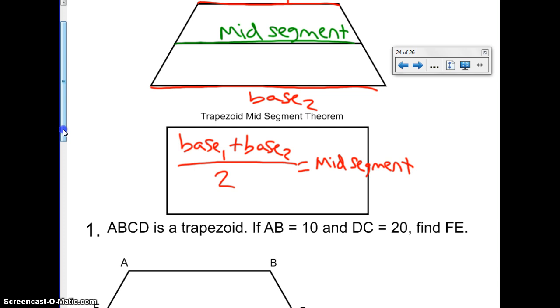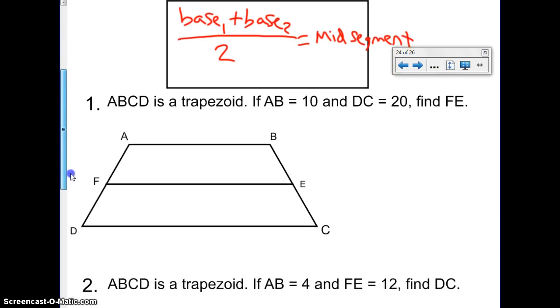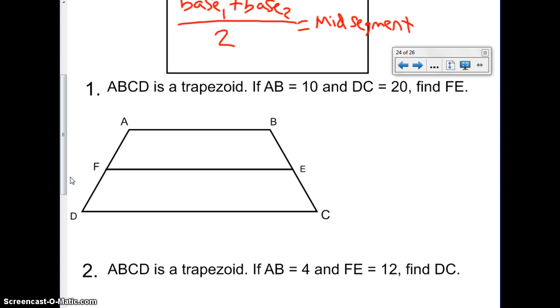Let's take a look at a couple of problems and see how we do it. It says ABCD is a trapezoid. If AB is 10 and DC is 20, find FE. Alright, so let's look at it. Let's label everything we know. AB is 10 and DC is 20. And we're looking for FE. That's our X.